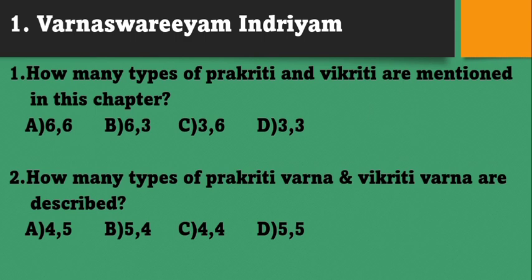Varnasvariyam Indriyam: How many types of Pragridhi and Vigridhi are mentioned in this chapter? Options: A) 6,6; B) 6,3; C) 3,6; D) 3,3. The types of Pragridhi are 6 and the types of Vigridhi mentioned in this chapter are 3. So, Option B.